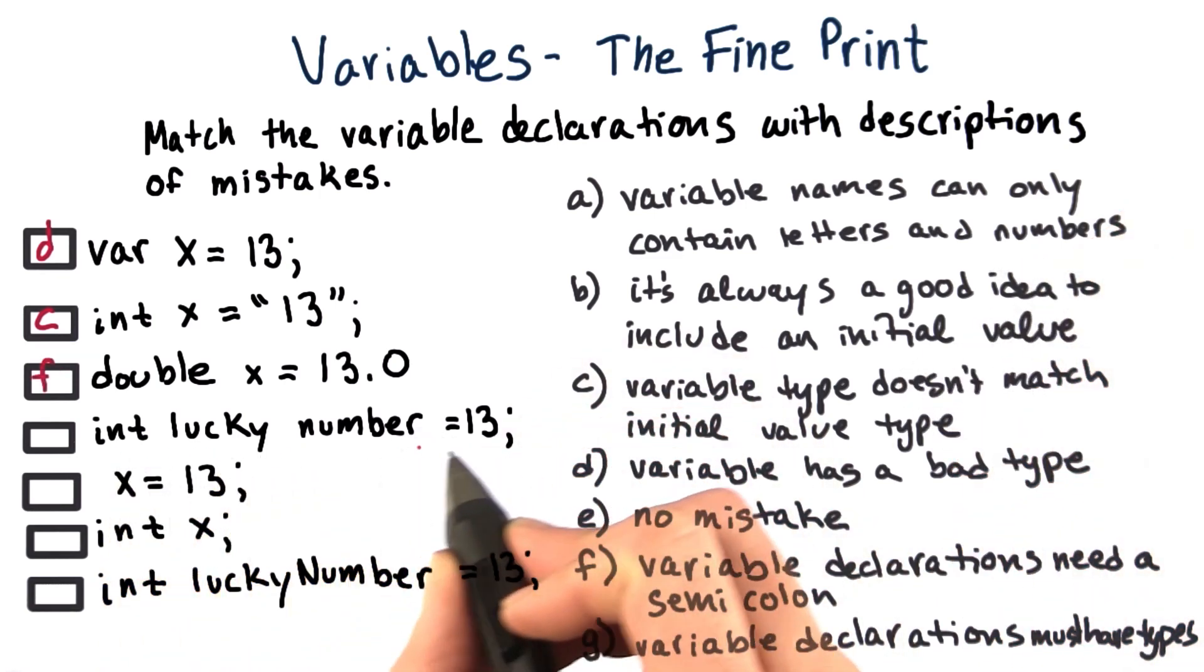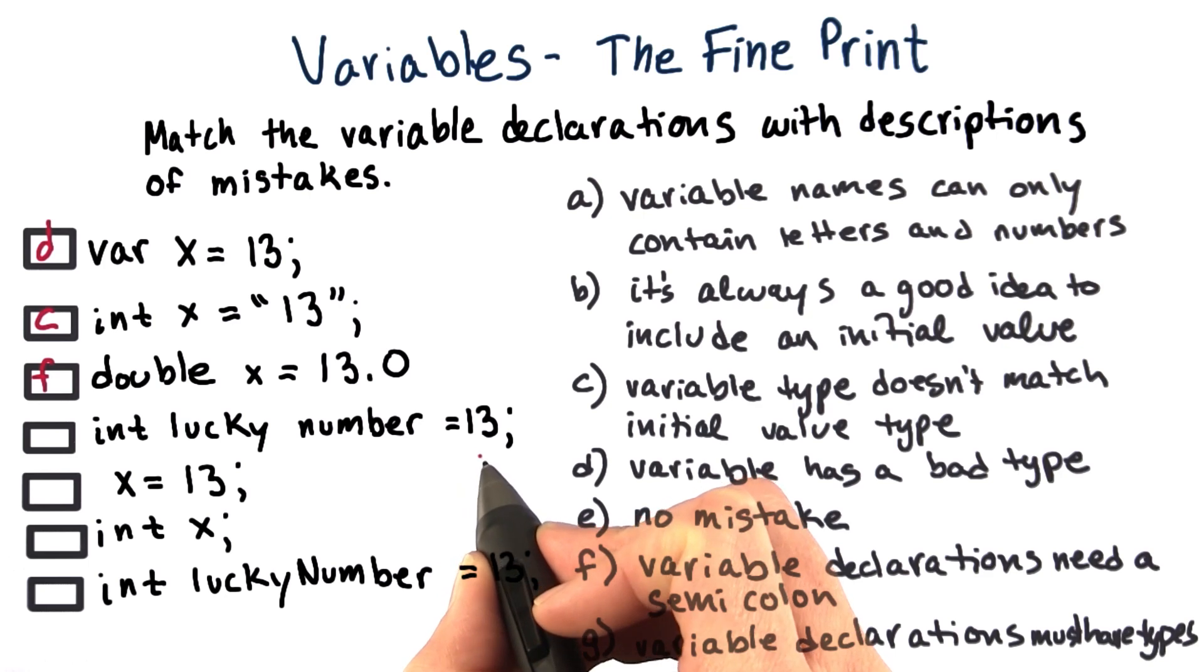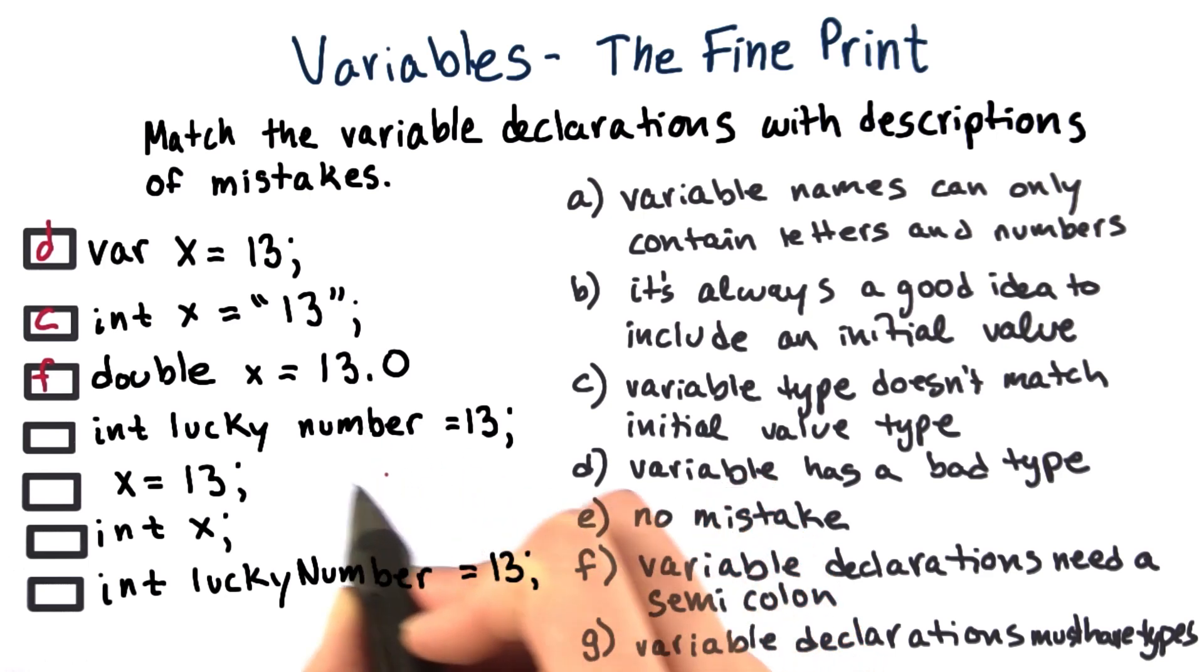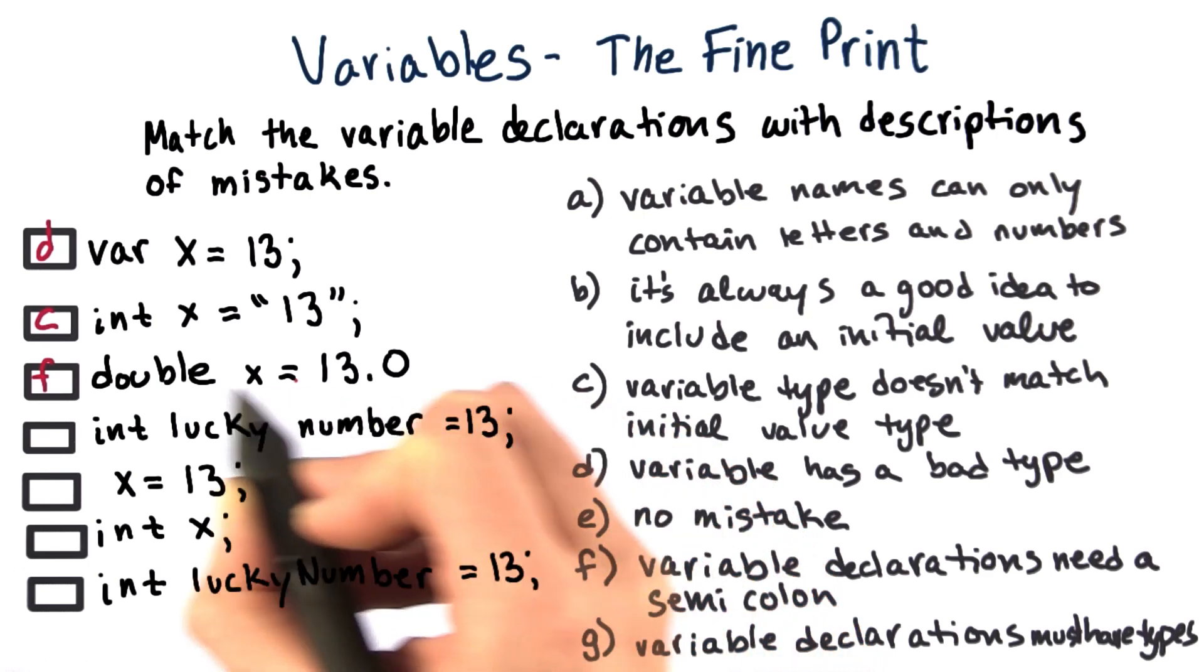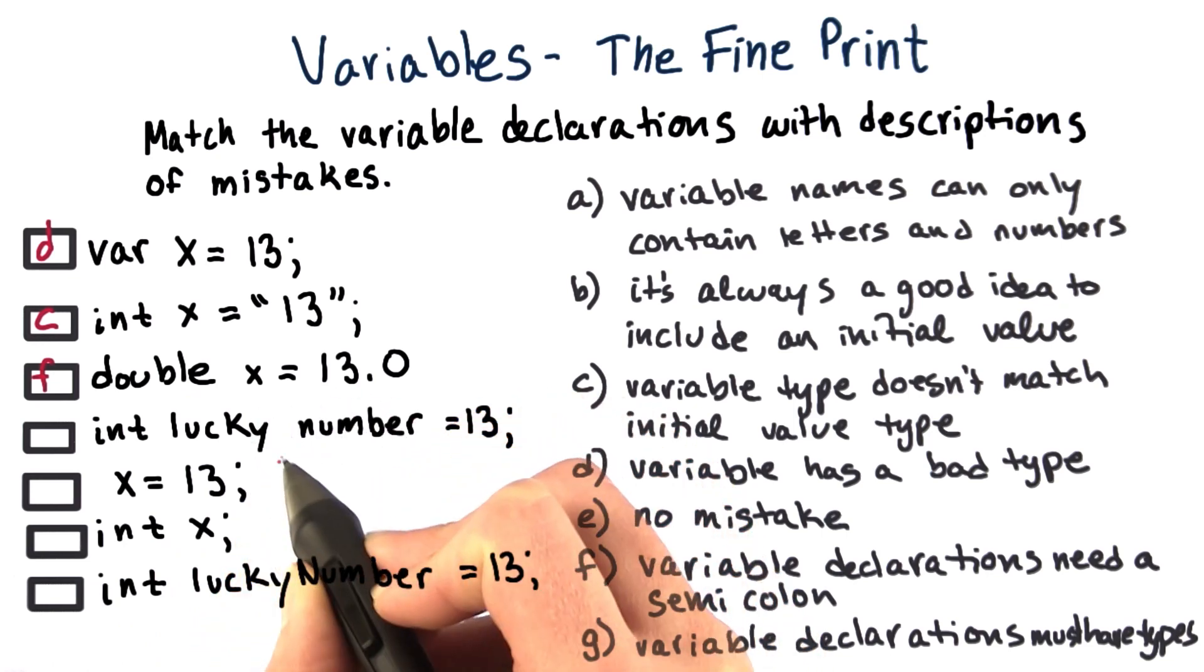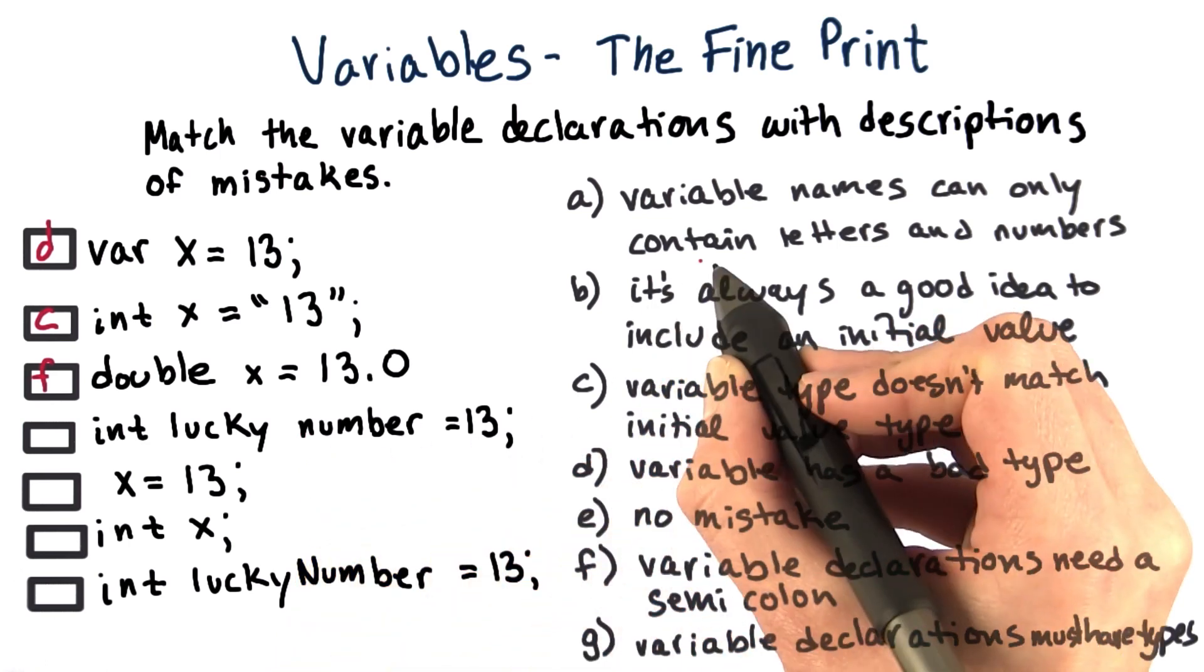Int lucky number equals 13. That one's a little bit trickier, but it looks like there's a space in what we meant to be our variable name, lucky number. We can't have spaces in variable names. They can only contain letters and numbers. So that would be A.